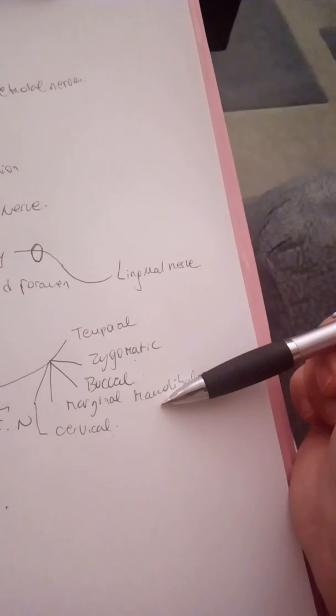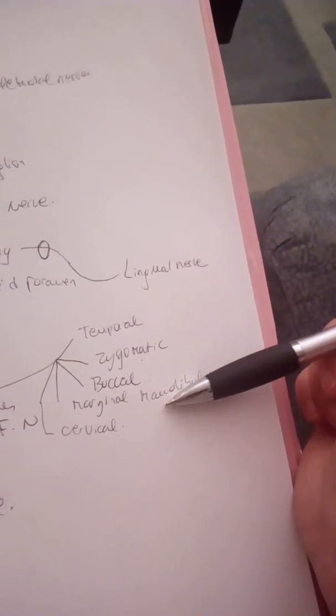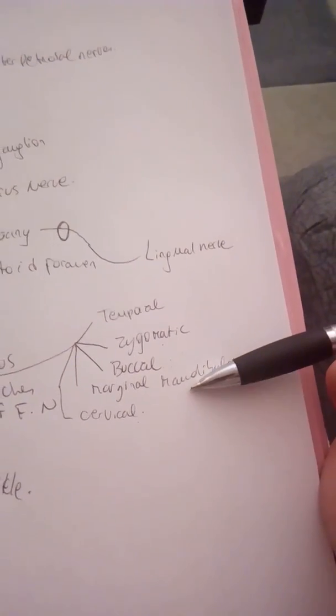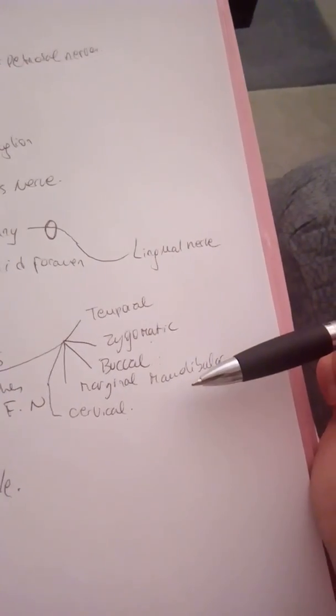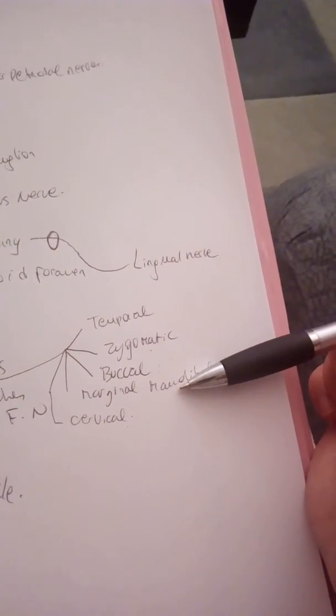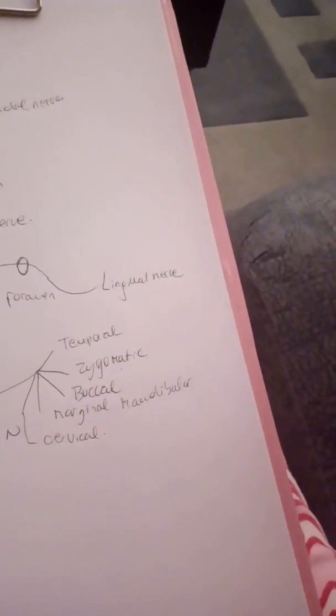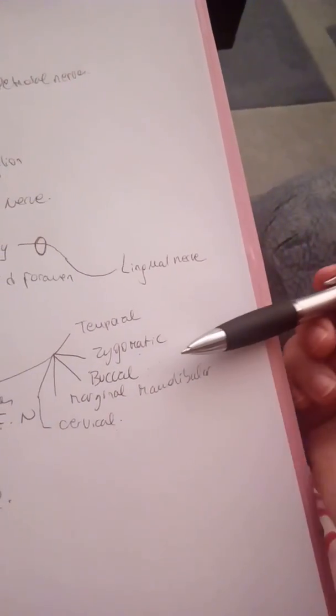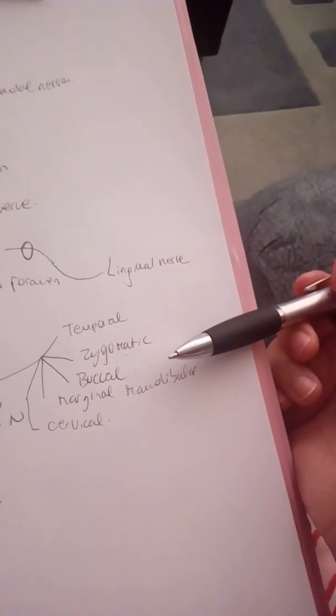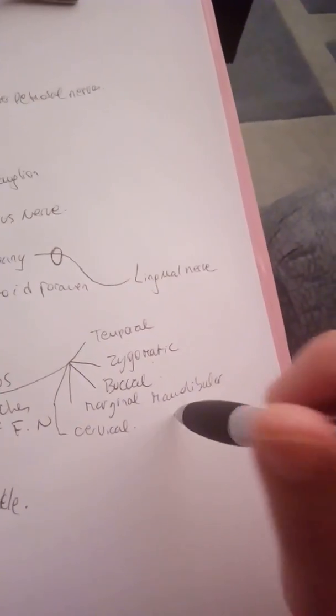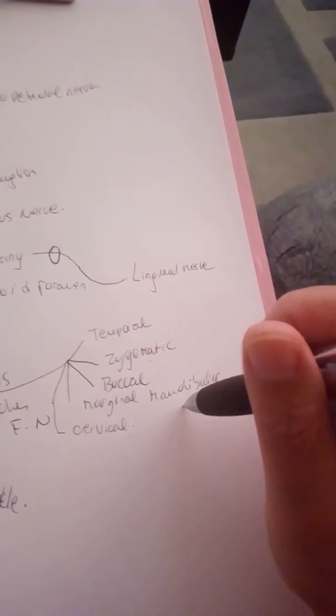The marginal mandibular will innervate the risorius, depressor anguli oris, depressor labii inferioris, and mentalis. And finally cervical will innervate the platysma muscle.